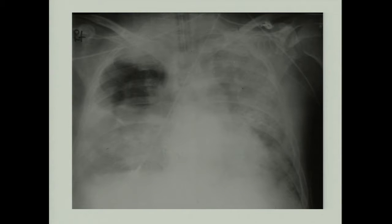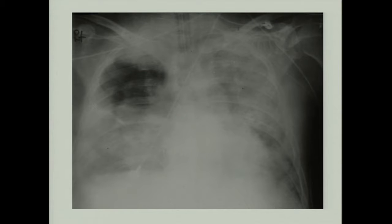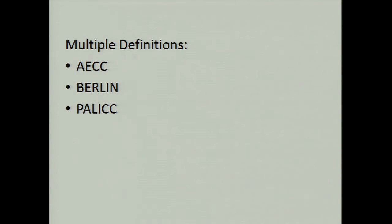This is typical severe ARDS — but this is not all. ARDS ranges in spectrum from very mild to this fulminant bilateral opacification of air spaces as seen in this chest X-ray. The definitions of ARDS have evolved over time, and even currently we have three well-known definitions that people use. Historically, ARDS was first defined by Ashberg and Petty.